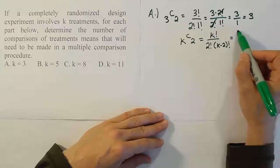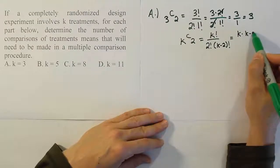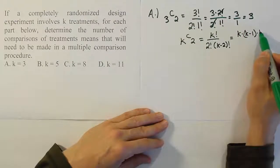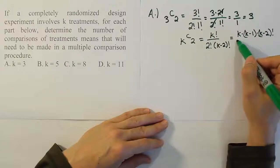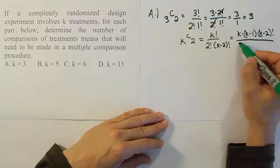That can simplify to k times (k-1) times (k-2) factorial on top. Then 2 factorial is just 2, and you have (k-2) factorial at the bottom.